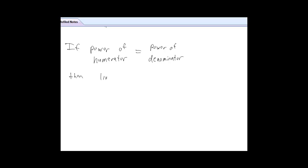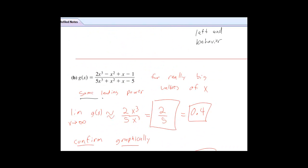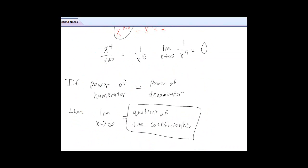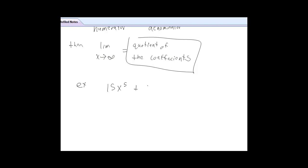Now, if the powers are the same, if your power of the numerator and denominator are the same, what you do is you take the quotient of your leading coefficients, which is what we did in example 2. You had 2x cubed over 5x cubed. It's no coincidence that the limit was 2 fifths, or 0.4.